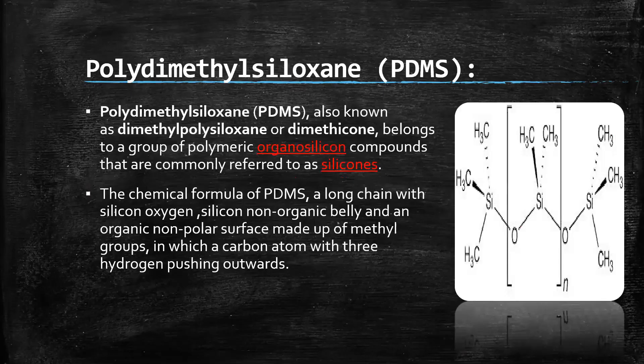Next is polydimethylsiloxane. Polydimethylsiloxane is also known as dimethyl polysiloxane or dimethicone. It belongs to a group of polymeric organosilicon compounds commonly referred to as silicones. The chemical formula of polydimethylsiloxane is a long chain with silicon and oxygen. It has a silicone non-organic body and an organic non-polar surface made up of methyl groups in which carbon atoms have three hydrogen atoms pushing out.